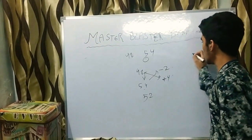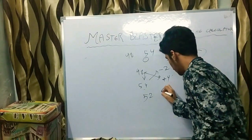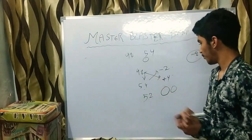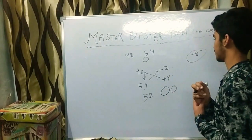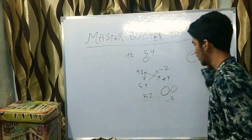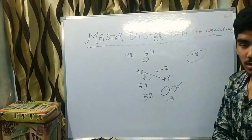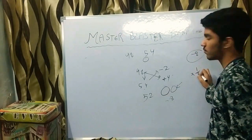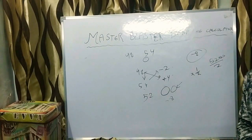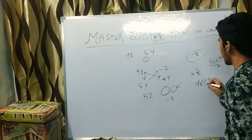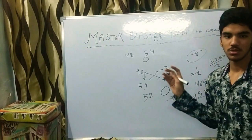For the second number, minus 2 times plus 4 equals minus 8. Since the nearest round number is 100 (two zeros), but you took 50, put two zeros: giving 5200. Because you took 50 instead of 100, multiply by half: 5200 divided by 2 equals 4600. Then subtract 8, giving 4600 minus 8 equals 5,592.